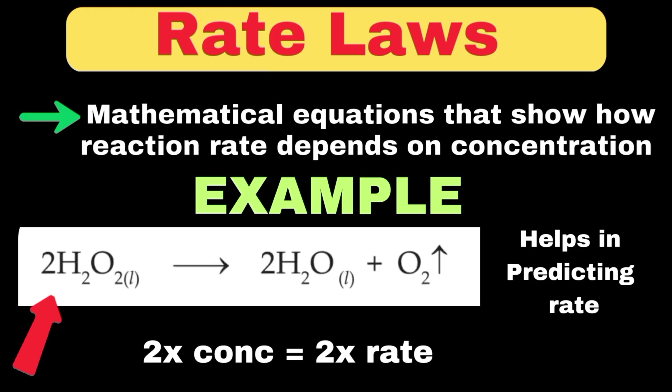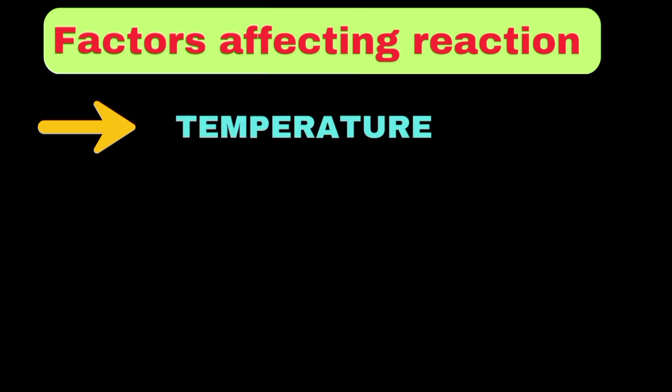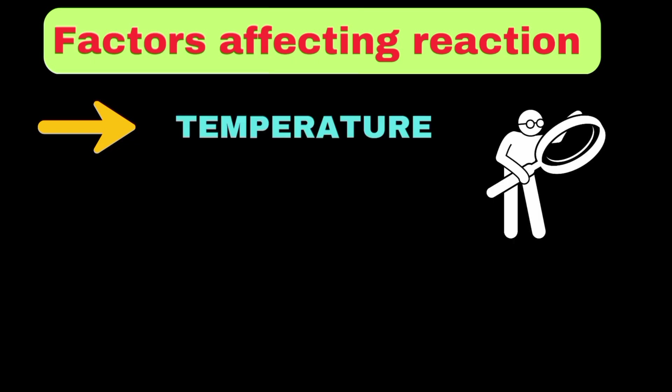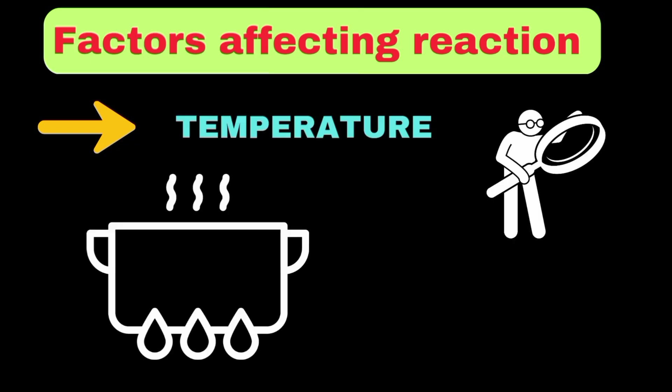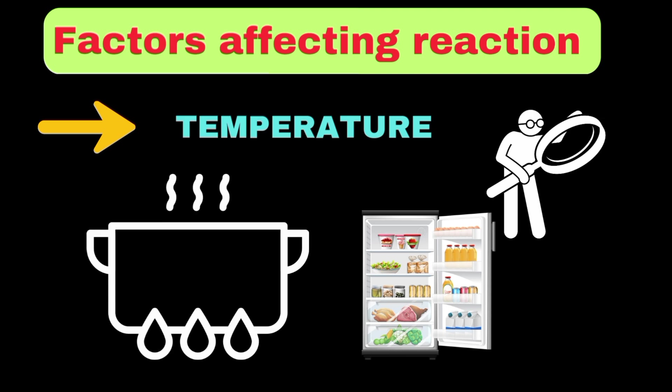Moving to the factors affecting reaction rates, temperature is one of the most important factors. When we increase the temperature, food cooks faster because the molecules have more energy and collide more frequently with enough energy to react. This is why we store food in refrigerators — the lower temperature slows down the chemical reactions that cause food to spoil.